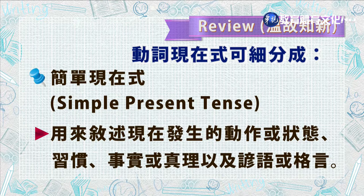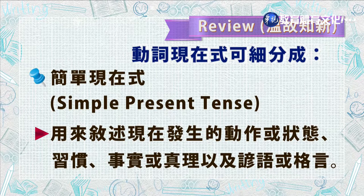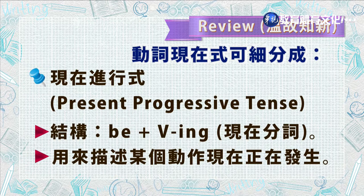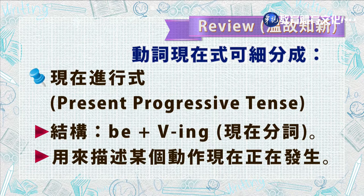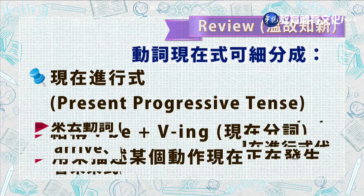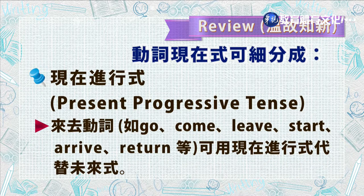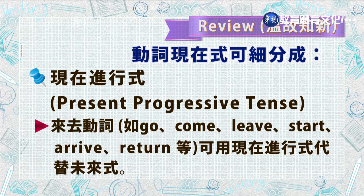第二，简单现在式用来叙述现在发生的动作或状态、习惯、事实或真理，以及谚语或格言。第三，现在进行式结构为 V 加 V-ing（现在分词），用来描述某个动作现在正在发生。第四，来去动词如 go（去）、come（来）、leave（离开）、start（开始）、arrive（到达）、return（回来）。